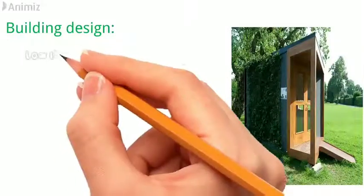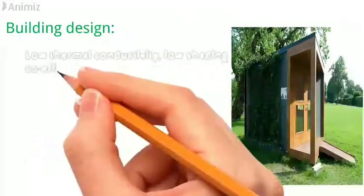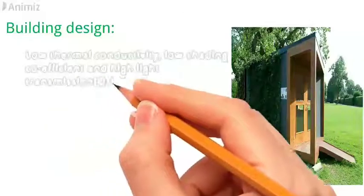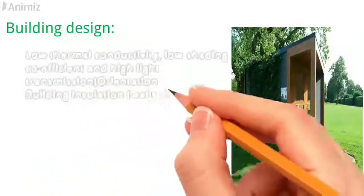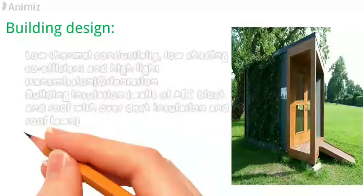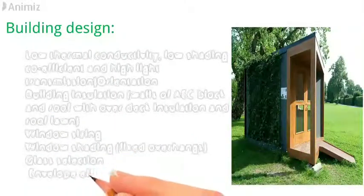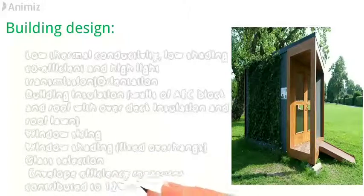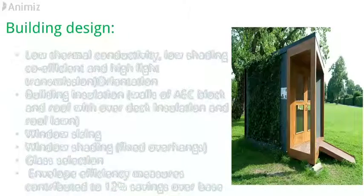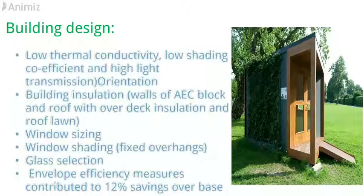Low thermal conductivity, low shading coefficient and high-light transmission orientation. Building insulation, walls, HVAC block and roof with over-deck insulation and roof-lawn window sizing window shading, fixed overhangs, glass selection. Envelope efficiency measures contributed to 12% savings over base case.